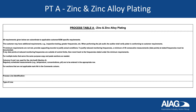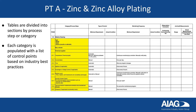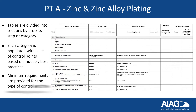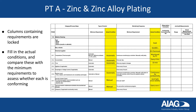Let's walk through some of process table A as an example. First, identify the process line and its type. The tables are divided into sections by process step or category. Each category is populated with a list of control points based on industry best practices. For each control, minimum requirements are provided for the type of control and the monitoring frequency. Columns containing requirements are locked. It is your responsibility to fill in the actual conditions and compare these with the minimum requirements to assess whether each is conforming.